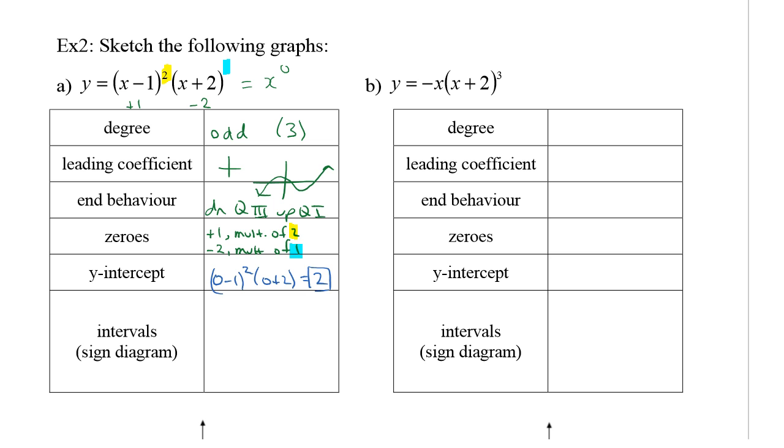The intervals. So if I did a sign diagram here, I've got negative 2 and plus 1. I know it's going to be positive over here and negative over here. The plus 1 is a multiplicity of 2, so it's going to bounce off but not cross here. So if that's the case, it will still be positive here. Let's test this out. If I plug in 0, I get (-1)² which is 1, times 2 is 2. So I get a positive value, which works.